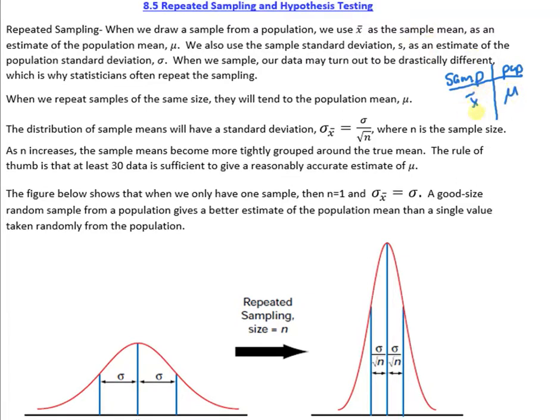So we take a sample which is X bar and we take an estimate of the actual population being mu, and we also take an estimate of the standard deviation S of the population standard deviation, and then we write sigma. S is also sigma, it's just lowercase sigma.